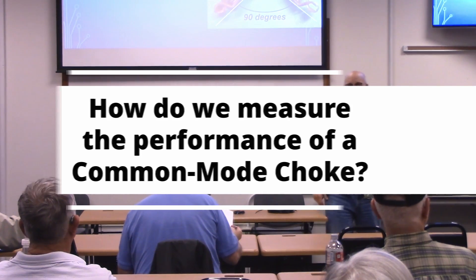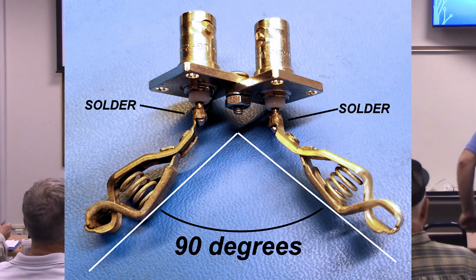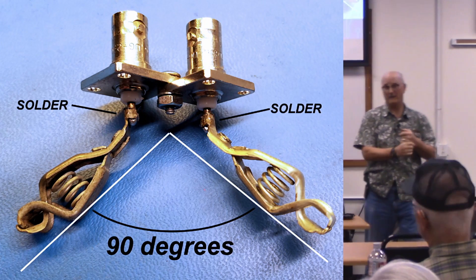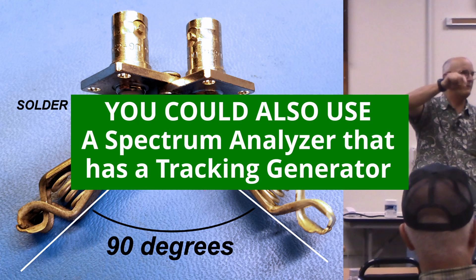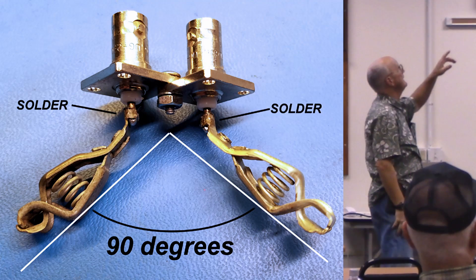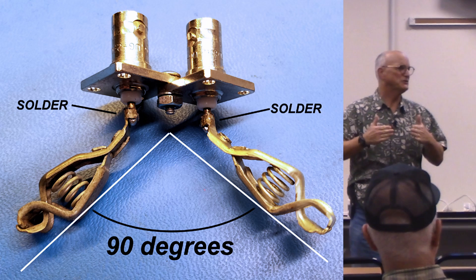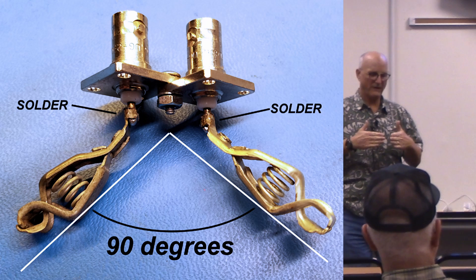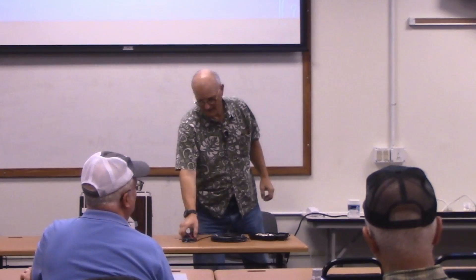So how do we measure the performance of a common mode choke? As you see on the screen, this very complicated test jig requires a two-port measurement system like a mini VNA tiny or a nano VNA - you put a signal out of one port and measure how big that signal is coming back in the other port. Mine is a couple of BNC connectors with clip leads at 90 degrees. You want those clips to be as short as possible. At 90 degrees they tend not to interact with each other as much.